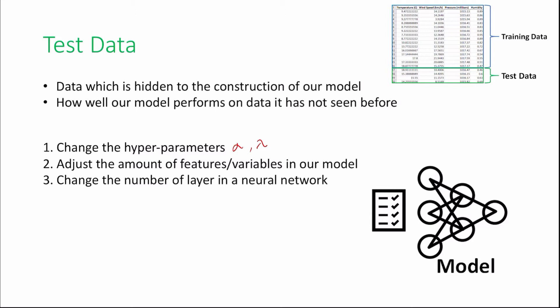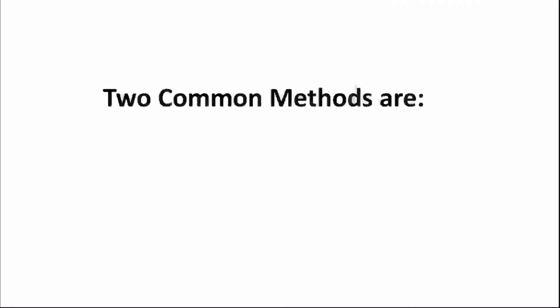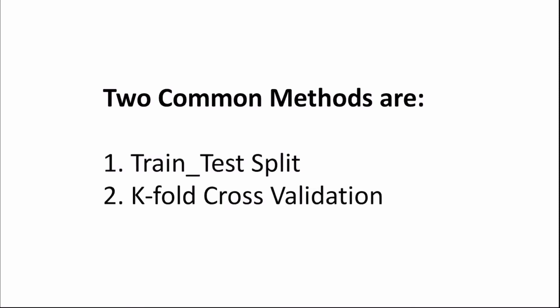So the process of using test data to evaluate our model is called cross-validation. But how exactly do we split our data between training data and test data? Two common methods are train-test-split and k-fold cross-validation.